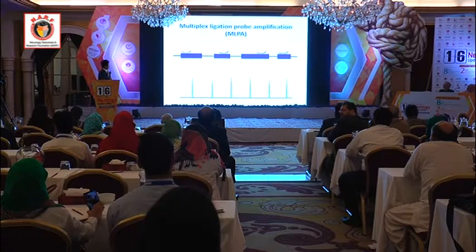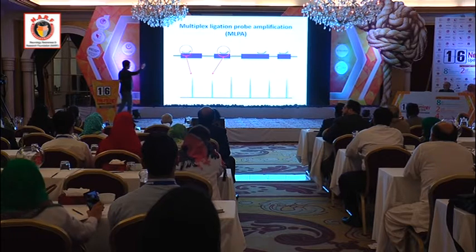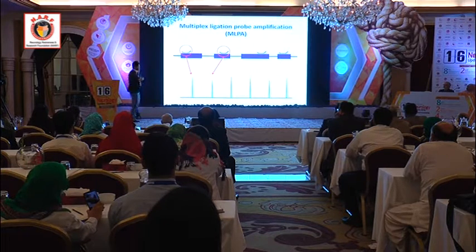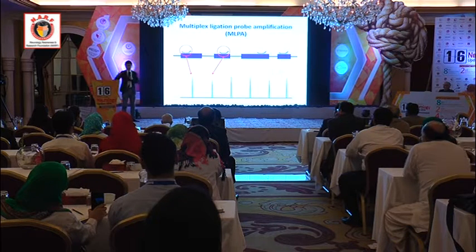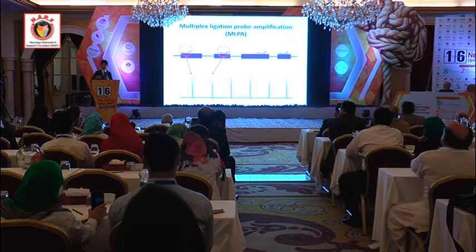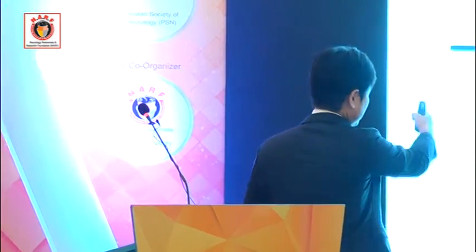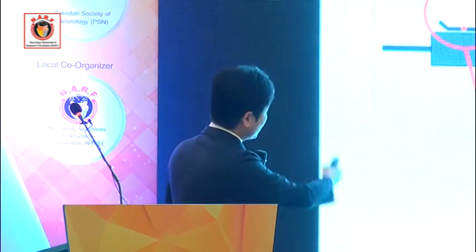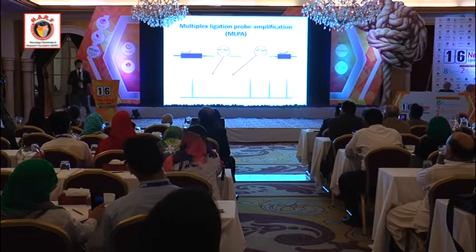The principle of MLPA is straightforward. You have exons, you use probes, and you perform PCR analysis. The PCR product for each exon will be a different size, so you can tell which peak corresponds to which exon. If you have a deletion, the result will clearly show which exons are missing — a very simple and easy test.